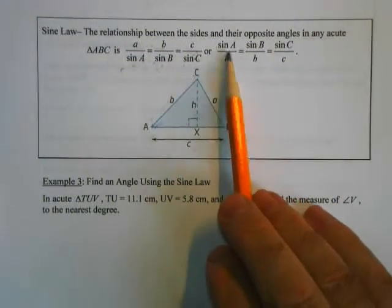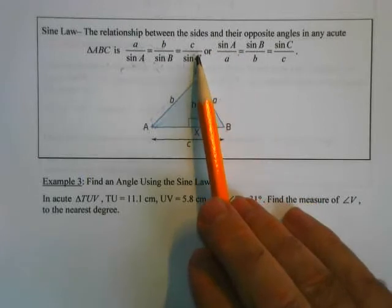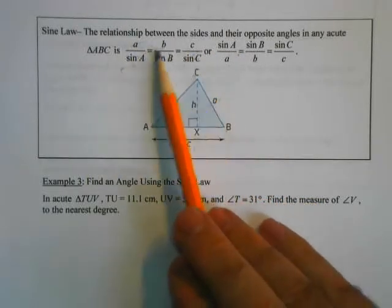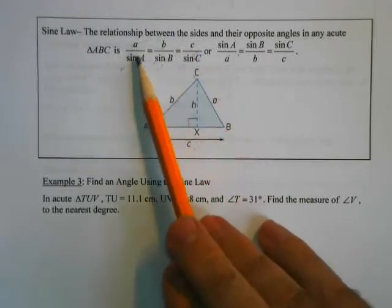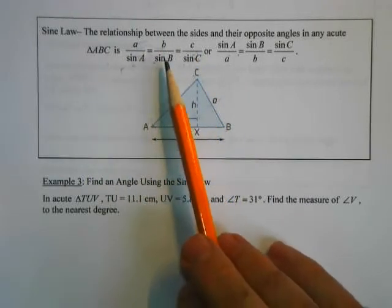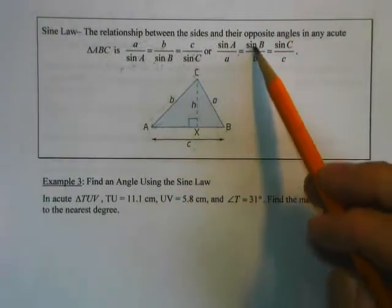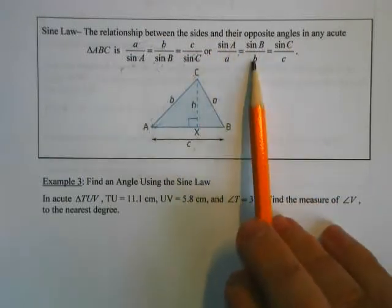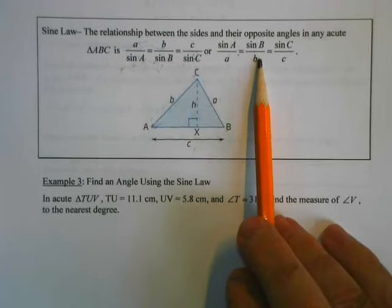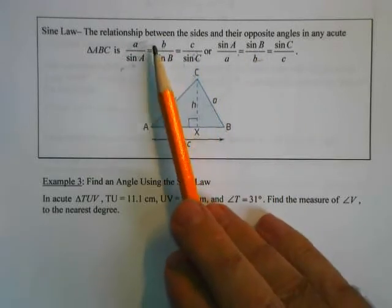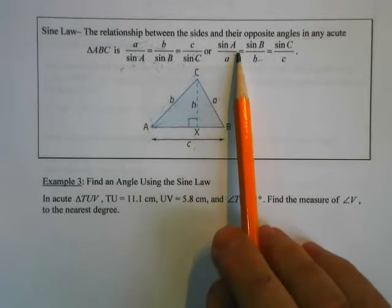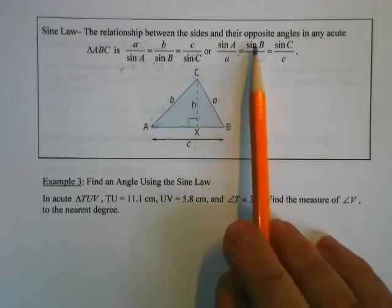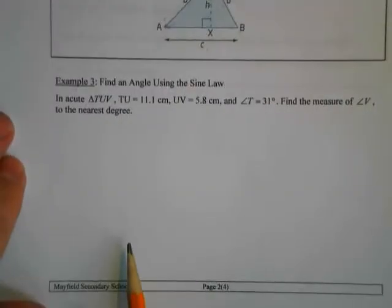There are two versions of the sine law. If you take the ratios and flip everything upside down, they're still equal — so you can use the reciprocal version with the angles on top: sin(A)/a = sin(B)/b = sin(C)/c. Which version should you use? If you're trying to solve for an unknown side, use the formula with the sides on top. If you're trying to solve for an angle, use the version with the sine of the angles on top.